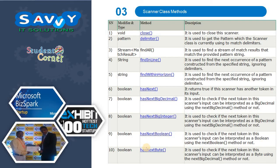Now we need to discuss what methods are available in Scanner class. Close: used to close the Scanner. Delimiter: used to get the pattern which the Scanner class is currently using to match delimiters. FindAll: used to find a stream of match results that match the provided pattern string. FindInLine: used to find the next occurrence of a pattern constructed from the specified string, ignoring delimiters. FindWithinHorizon: used to find the next occurrence of a pattern constructed from the specified string, ignoring delimiters. HasNext: returns true if this Scanner has another token in its input.